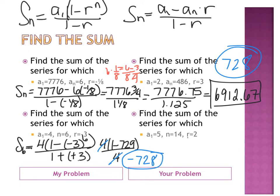And what happens to my 4s? They cancel, and I get negative 728. Give the next problem a try, where A1 equals 5, N is 14, and R is 2. Make sure you're using order of operations exponents before multiply, before addition, subtraction. Evaluate the numerator and the denominator separately. So, we get 81,915.